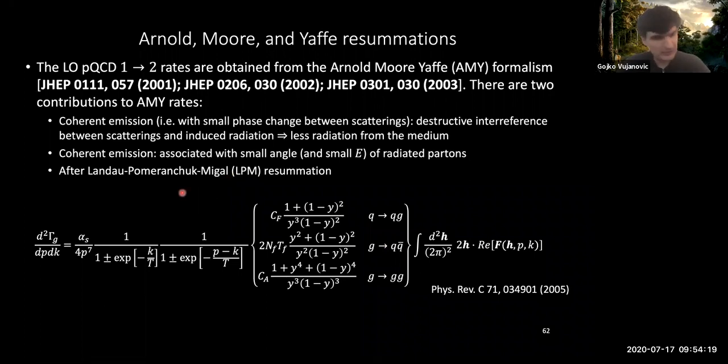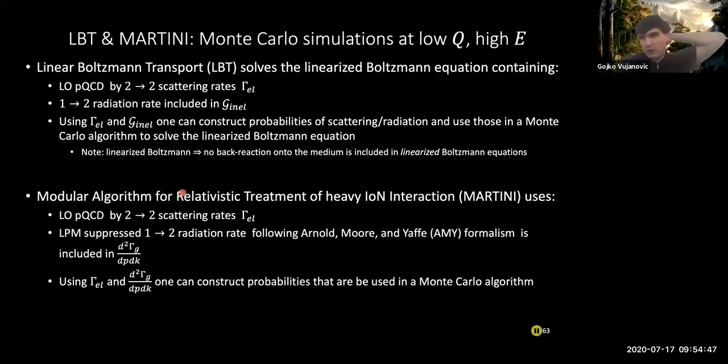So now essentially all of the pieces are at hand. The 2-2 scatterings that we have are the same as in both Martini and LBT, whereas the 1-2 splittings are sort of treated differently in one case than the other. So in LBT, we just have this single radiation, and in Martini, we actually are resumming a whole set of diagrams that are contributing to this LPM effect. So let me quickly go over as to how these radiations are implemented inside of the framework. So what you essentially do is that for both of these leading order 2-2 scatterings, so you can use the leading order rates. And if you multiply them by a small enough delta time, you can essentially say that in that small enough delta T, that essentially gives you what the probability is that you have scattering.